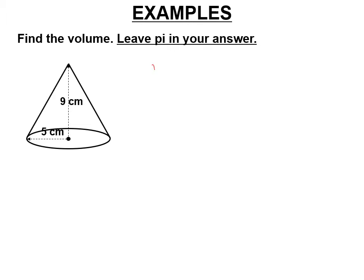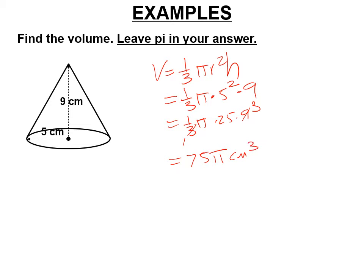We're going to leave pi in our answer this time. So it's one-third pi r squared h. So it's one-third pi. Radius here is 5, which you have to square. Don't forget to square it, which is one-third times pi times 25 times 9. We can cancel the 3 of the 9. 25 times 3 is 75. So it's 75 pi cubic centimeters for the volume.